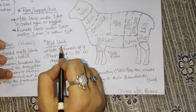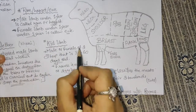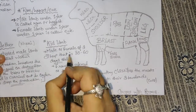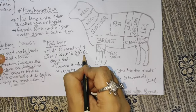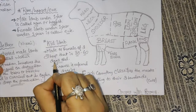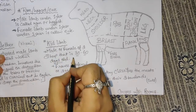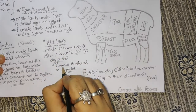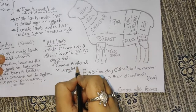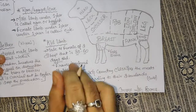Then we have kid lamb. A male or female sheep that is 30 to 60 days old is referred to as a kid lamb.